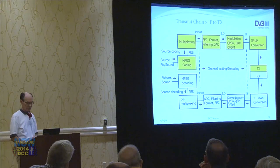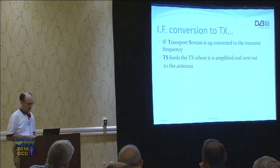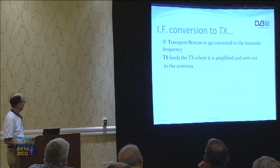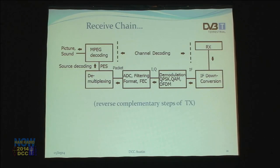The signal is then up-converted to the transmitter, amplified, and sent out to the antenna. The receive chain is basically the reverse: down-converted, demodulated, A-to-D converted, demultiplexed, back through MPEG decoding through all those streams, and out comes the picture. That's a quick overview of MPEG — it's very important for DVB, otherwise digital ATV wouldn't be available today.